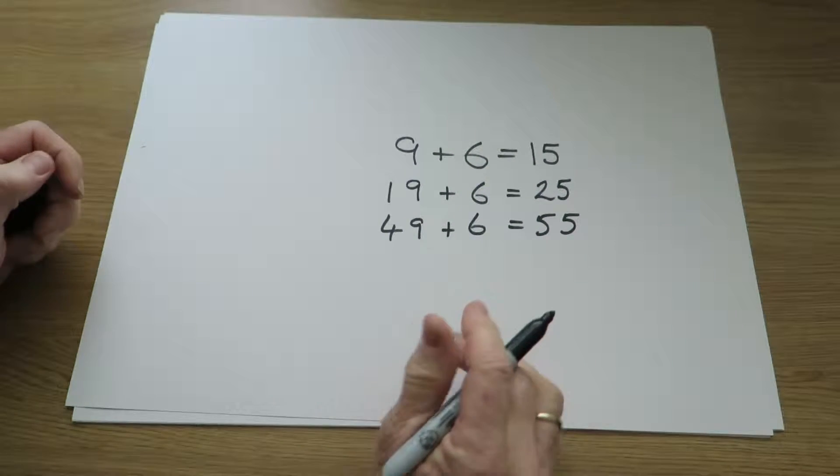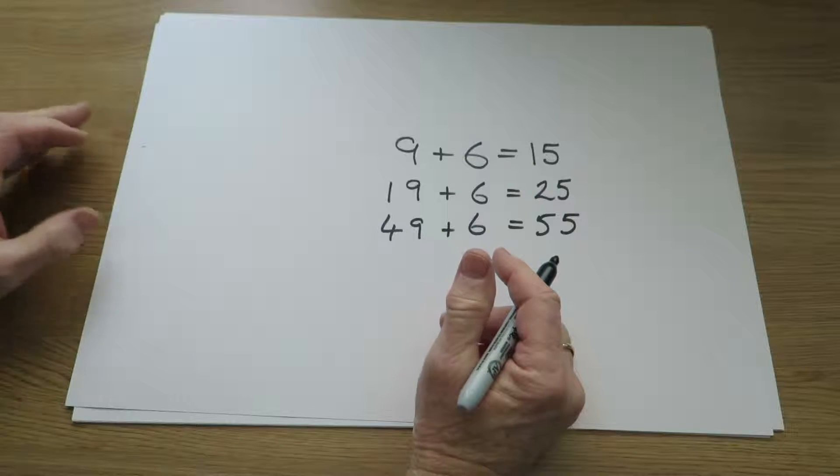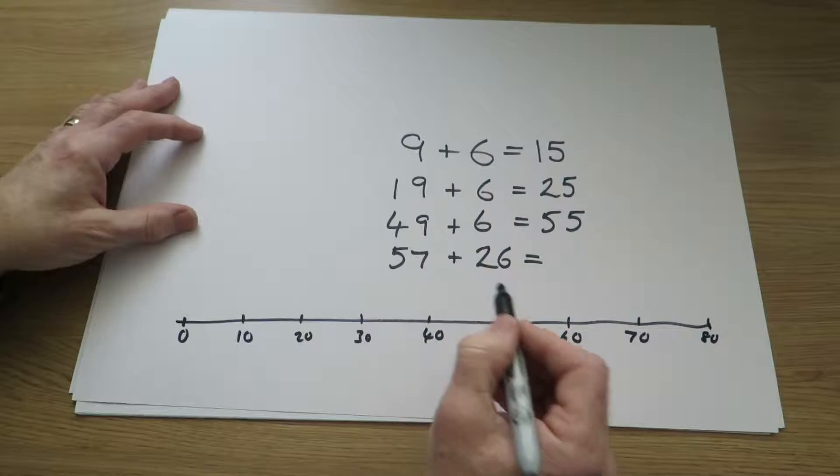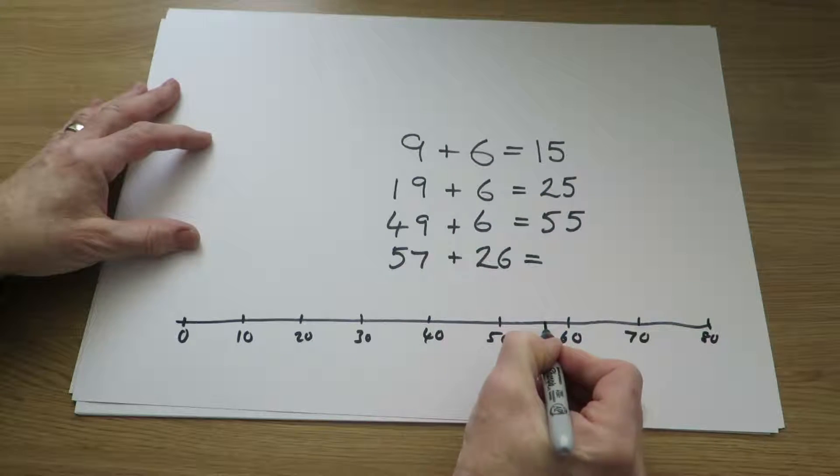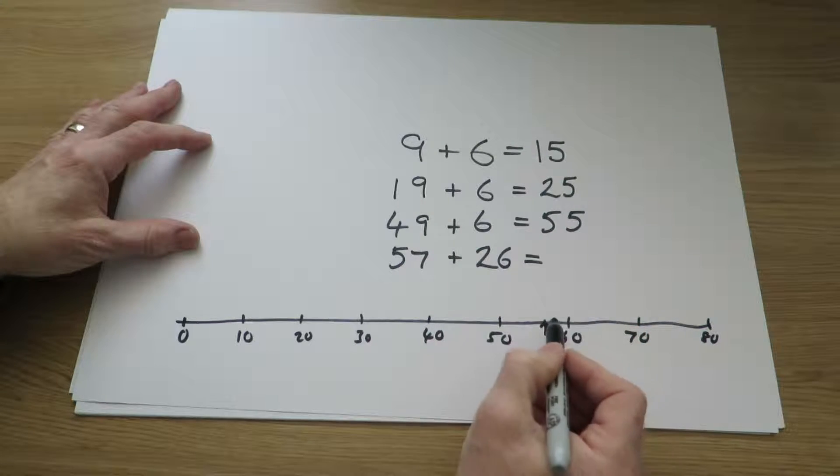For some questions they may find it helpful to use number lines, and they may be sketching their own. 57, so they are starting there at 57. They are adding 26.